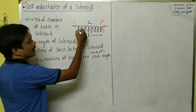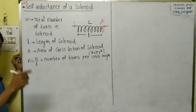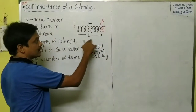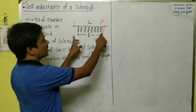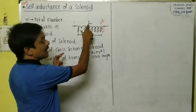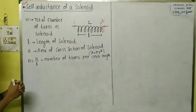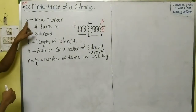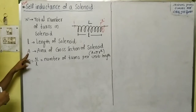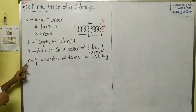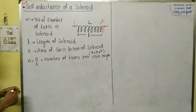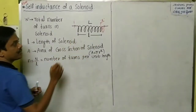A solenoid is an insulated copper wire wound over a cylinder. Let us define the variables: small l is the length of the solenoid, capital A is the area of cross-section, capital L is the self-inductance, I is the current at any instant, capital N is the total number of turns, and small n is the number of turns per unit length.